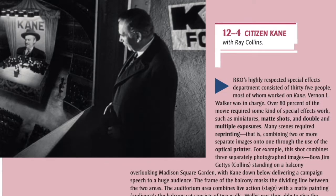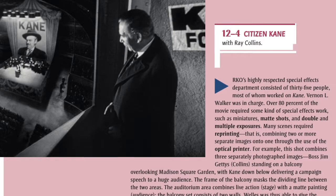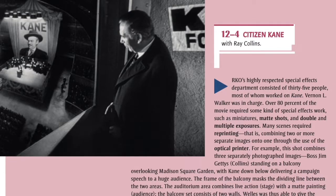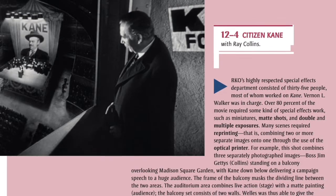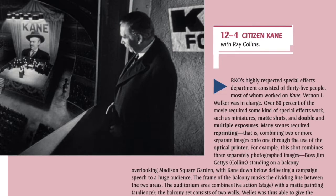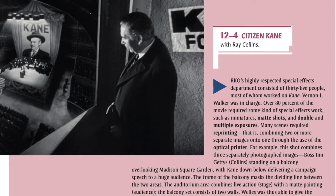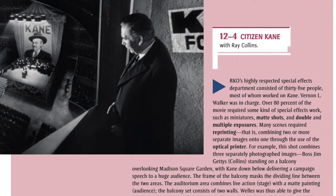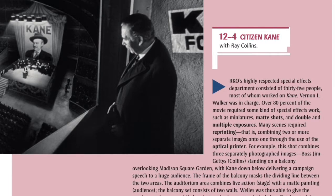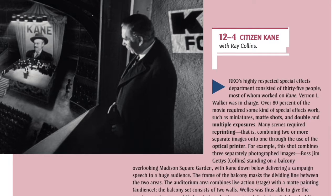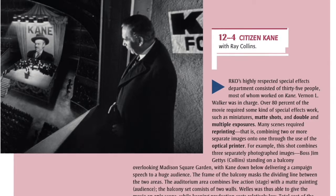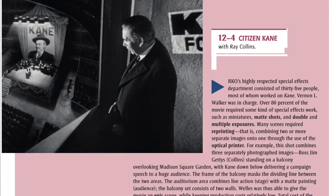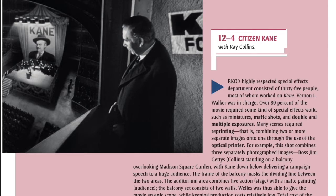For example, this shot combines three separately photographed images: Boss Jim Geddes (Collins) standing on a balcony overlooking Madison Square Garden, with Kane down below delivering a campaign speech to a huge audience. The frame of the balcony masks the dividing line between the two areas. The auditorium area combines live-action stage with the matte painting audience; the balcony set consists of two walls. Welles was thus able to give the movie an epic scope while keeping production costs relatively low.